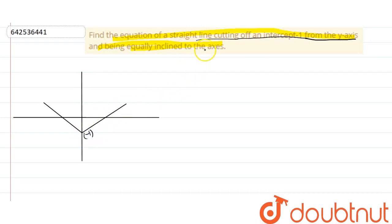And also, the question has already mentioned that being equally inclined to the axis. That's why I have drawn two straight lines here, which makes an equal angle.